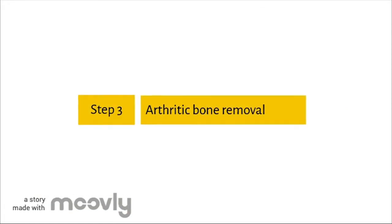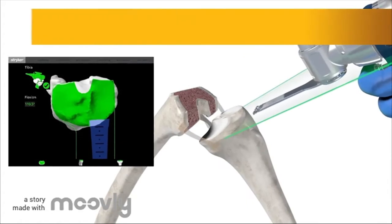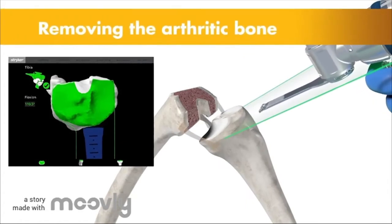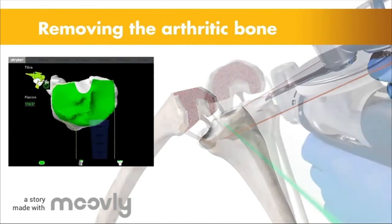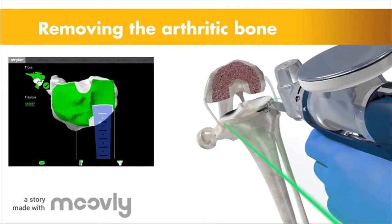The next step is the removal of the arthritic bone. During this step, the Mako robotic arm removes the arthritic bone and cartilage from the knee. A virtual boundary provides tactile resistance, which helps prevent the surgeon from moving outside the restricted boundaries defined in the surgical plan.